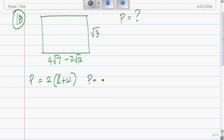Perimeter equals 2 times 4√7 plus 2√12 times... minus? Oh sorry. Wait, isn't it plus? It's plus, right. Plus √3. Our recording is now messed up. Plus. Here we go.